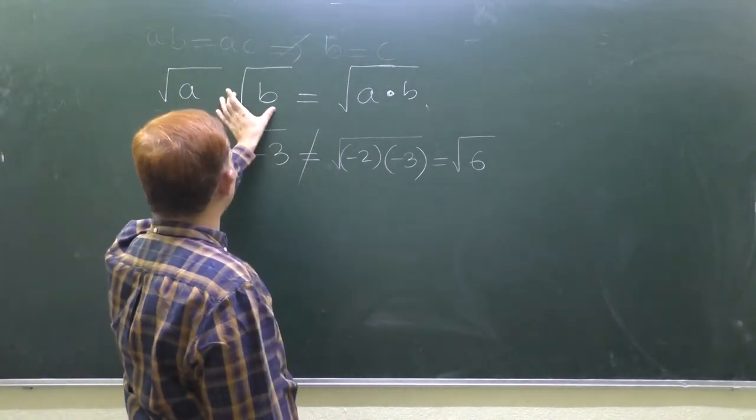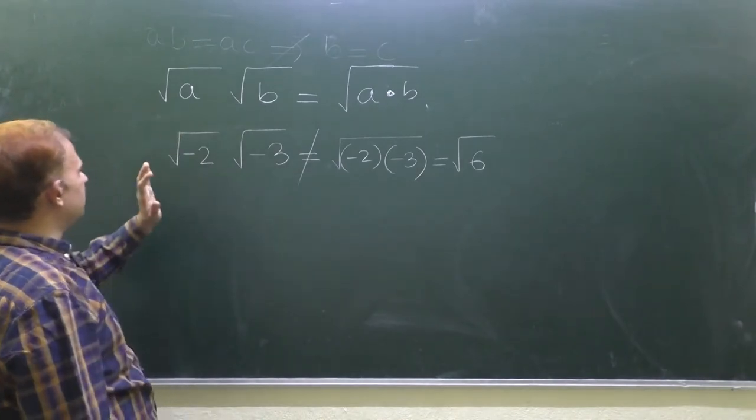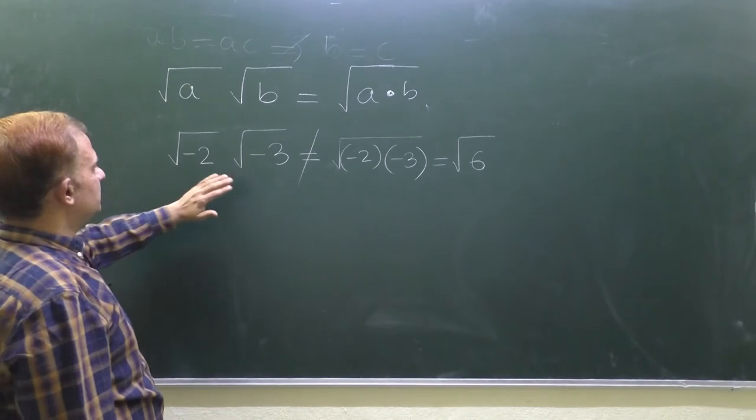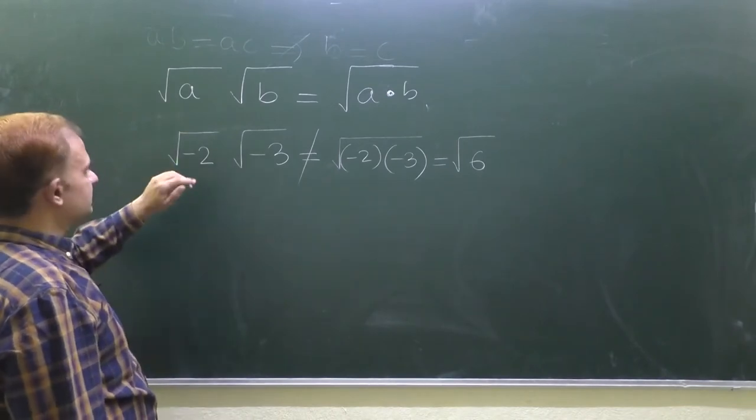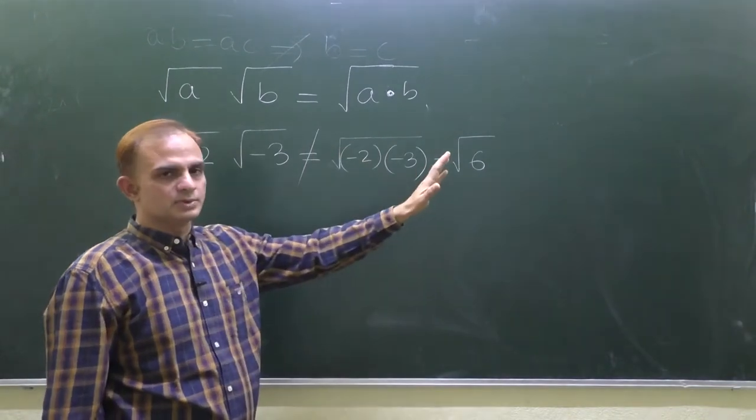We have seen that root A into root B is equal to root of A into B. But if I apply the same result for these two numbers, for these two negative numbers, root minus 2 into root minus 3, then this is not equal to root 6.